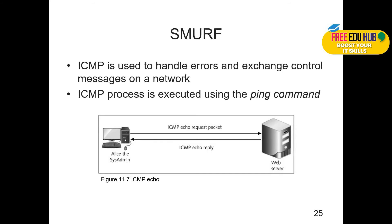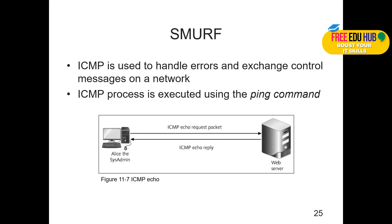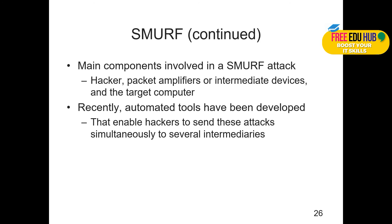A SMURF attack is an ICMP-based attack. ICMP is used to handle errors and exchange control messages on a network. Echo messages are sent to remote clients in order to receive feedback from them — to know that they are active or reachable and to detect any problems on the network. ICMP is executed using the ping command. The main components involved in a SMURF attack are the hacker, a packet amplifier or intermediate devices, and the target computer.